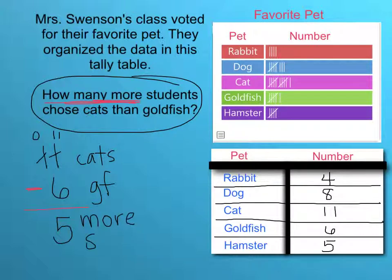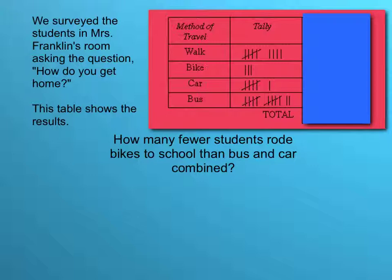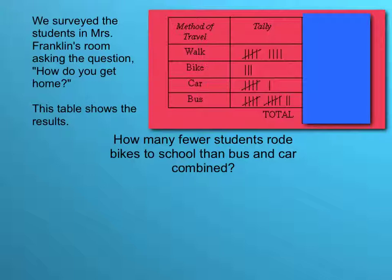And you would write five more students. We took our tally table and made a frequency table so we could see the numbers more clearly, and that gave us our answer. Let's look at a different one. We surveyed the students in Ms. Franklin's room asking the question: how do you get home? When you survey people and conduct a survey, you create a table to show the results. So we asked everybody in Ms. Franklin's room and tallied for every student that voted — walk, bike, car, and bus.